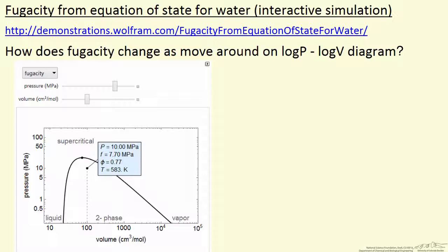What the simulation does is plot the log of pressure versus log of volume, and then at a given point, as indicated by this dot, it reads off the pressure, the fugacity, the fugacity coefficient,